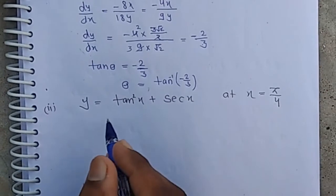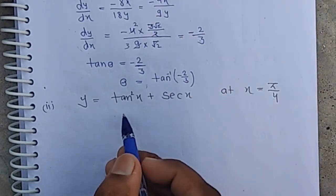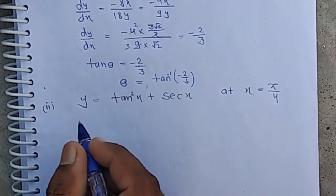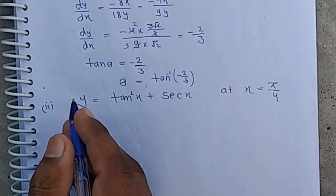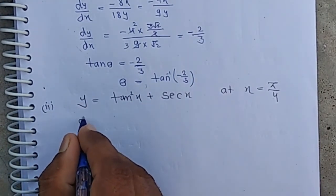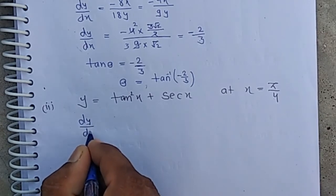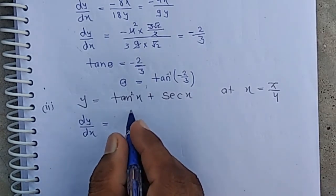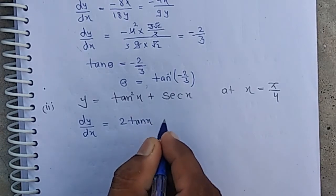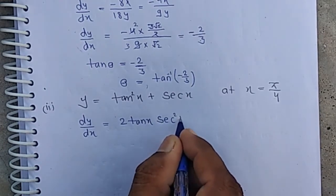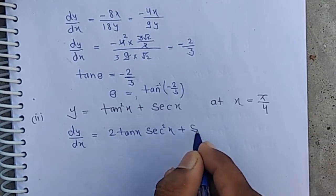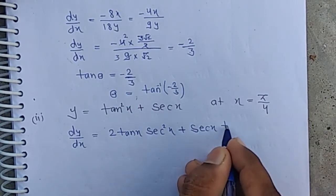The second question: y = tan²x + sec x at x = π/4. We need to find the slope of the tangent. Differentiating with respect to x: dy/dx = 2 tan x · sec²x + sec x · tan x.